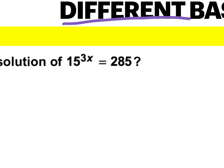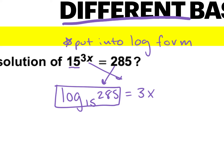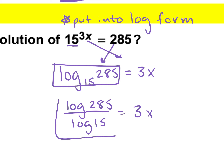So what we do is put it into log form. I start with the base — what's my base here? 15. So I have log base 15, then we flip the order of the other two: log base 15 of 285 equals 3x. To put this into the calculator, we use the change of base formula: log of 285 on top over log of 15, and it's equal to 3x.